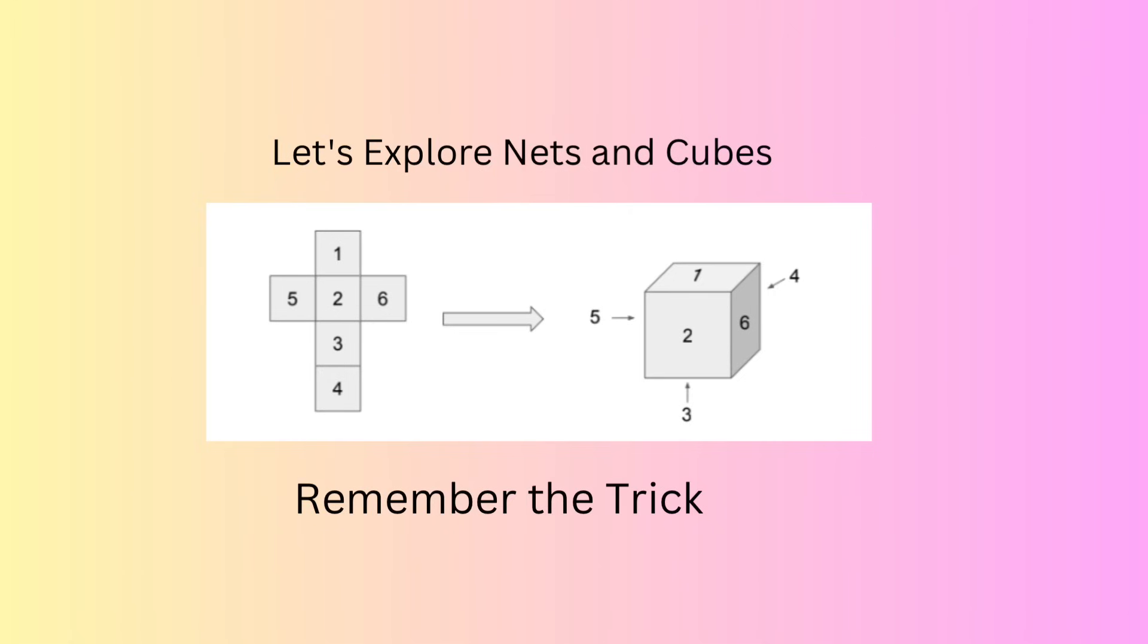Remember to number the net this way: 1 will be opposite 3, 2 will be opposite 4, and 5 will be opposite 6.